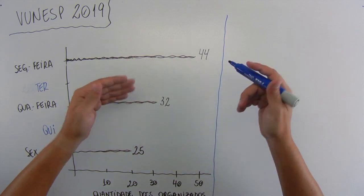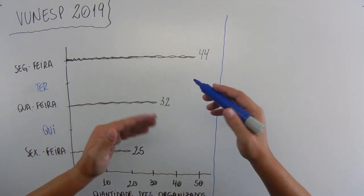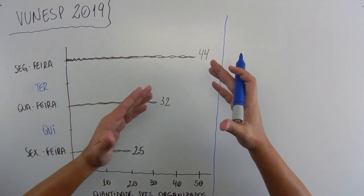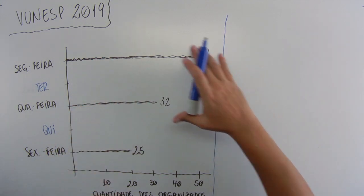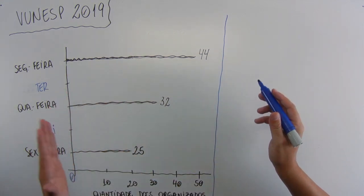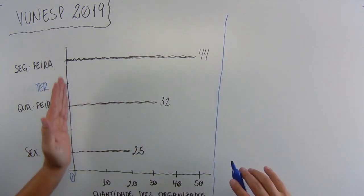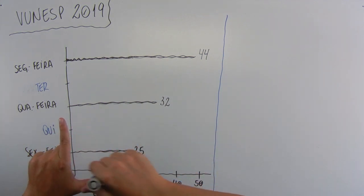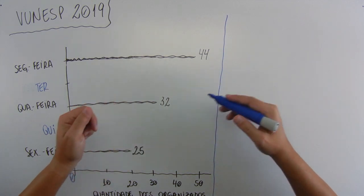The problem statement presents information about the quantities of documents organized in archives by an administrative official on some days of the week. We've already seen this, right? Here is zero, right? Here, just to remember, eixo Y, which is vertical, and eixo X, which is horizontal. This is the norm, let's say, of mathematics. Continuing.